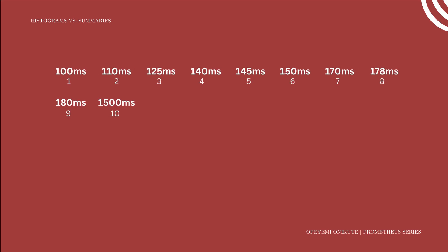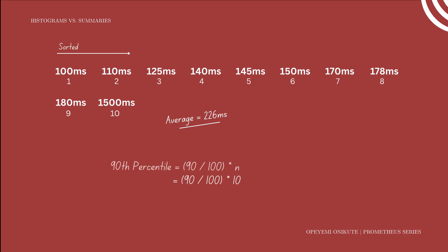Let's say your web app processes 10 requests and you measure how long each one took in milliseconds. The average is the sum of all latencies divided by the number of requests, which is 226 milliseconds. To get the 90th percentile, we first make sure the values are sorted, then find the position by dividing 90 by 100 and multiplying the number of entries. The 90th percentile is in the 9th position, meaning 90% of requests are less than 180 milliseconds — much less than the average, giving you a better view of actual user experience.